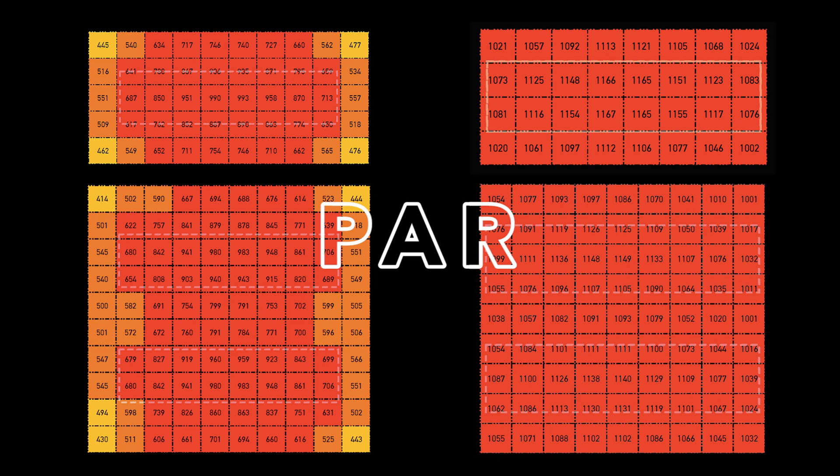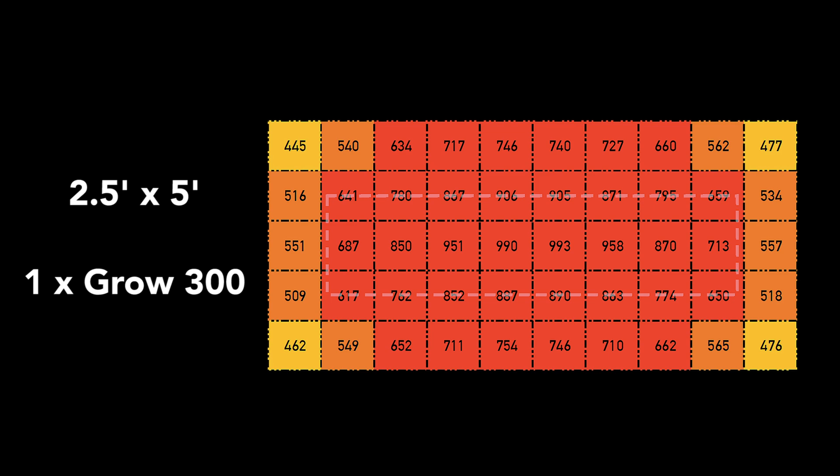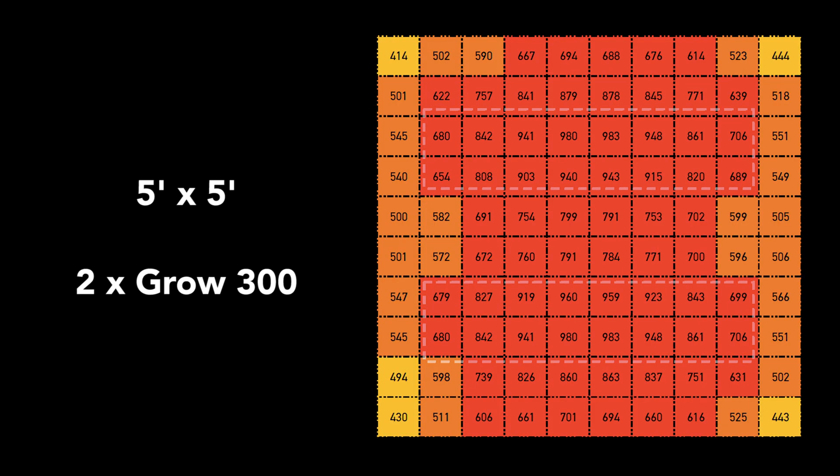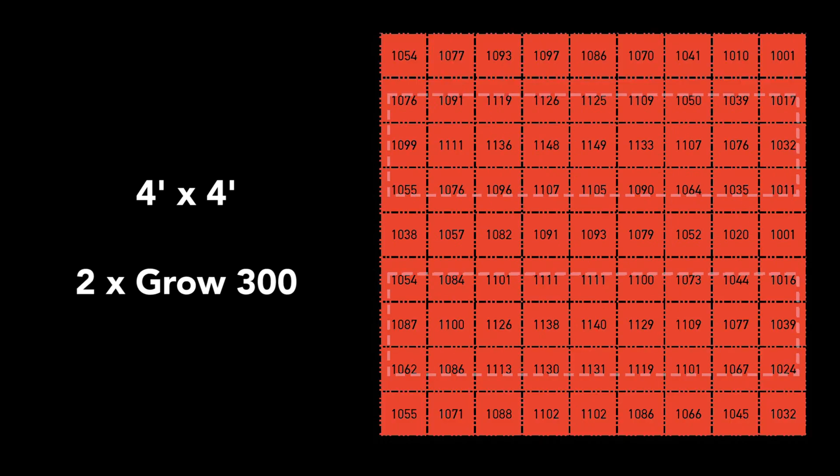Grow Light Science took some good PAR readings of their fixtures in different sized spaces, with reflective walls and a dark floor. I'm going to show them here so feel free to pause the video if you want a closer look. The different sized areas were 2.5x5, 5x5, 2x4, and 4x4.